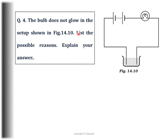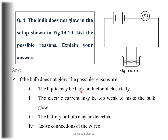Question number 4: The bulb does not glow in the setup shown in the figure — list the possible reasons. We have a battery, a bulb, and the tester's free ends dipped into a solution. The first reason is the liquid may be a bad conductor of electricity; the circuit is incomplete and so there is no flow of electricity, hence the bulb will not glow. The second reason is the electric current may be too weak to make the bulb glow — in that case we replace the bulb with an LED. The third reason is either the battery or the bulb may be defective, and the fourth reason is there may be a loose connection in the wires.